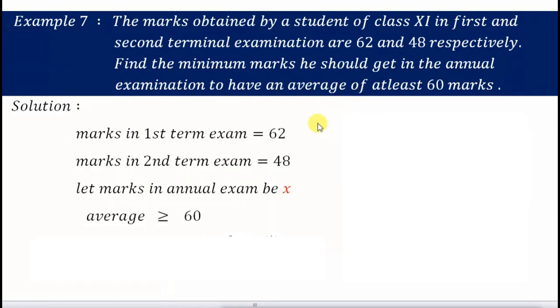So what will be the average? Average should be greater than or equals to 60, but it cannot be lesser than 60. What is average? Average is the sum of quantity divided by total number of quantity. And here the quantity is marks.